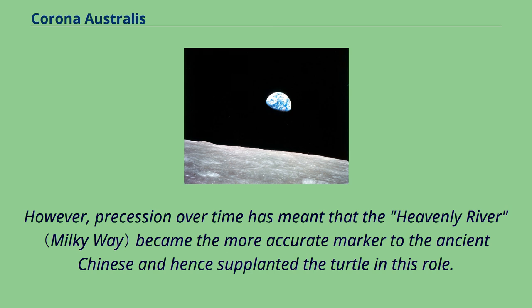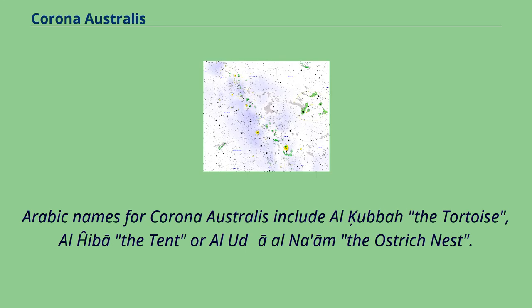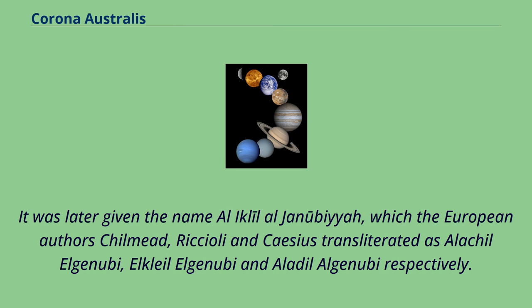Arabic names for Corona Australis include Al-Kubba (the tortoise), Al-Heba (the tent), or Al-Udha Al-Na'am (the ostrich nest). It was later given the name Al-Iklil al-Janubiyya, which the European authors Chilmead, Riccioli, and Caesius transliterated as Alacial al-Janubi, Al-Klial al-Janubi, and Aladil al-Janubi respectively.